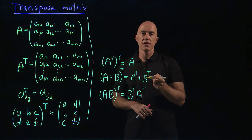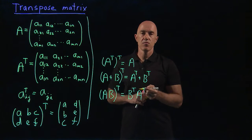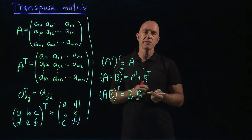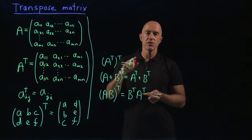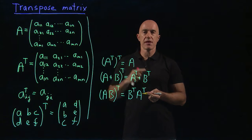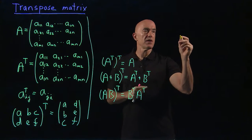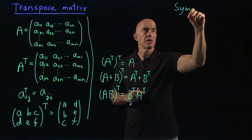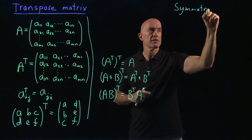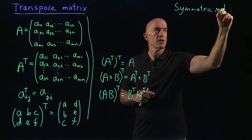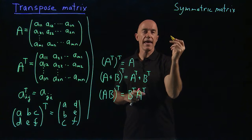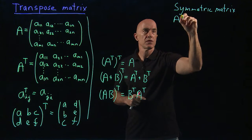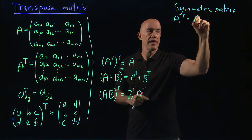Remember that order of multiplication matters a lot when you multiply matrices. Using the transpose operator, we can introduce two more special matrices. One of them is called a symmetric matrix. A symmetric matrix has the following property: A is symmetric if A transpose equals A.